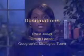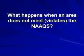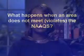Hi, my name is Rhea Jones, and I'm the group leader for the Geographic Strategies Group in the Office of Air Quality Planning and Standards. Today, I'll be covering the air quality designations process, as well as requirements for addressing air pollution that is transported from state to state, and requirements to protect visibility in National Class I areas. Let's start with air quality designations. Once a new NAAQS is promulgated, EPA is responsible for determining if an area's air quality meets the standard. We do this using air quality monitoring data, information received from states, technical analyses, and other factors to assess air quality against the standard. This is called designations.